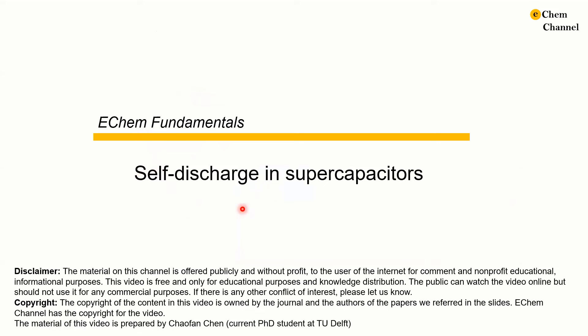Self-discharge is the voltage drop experienced by electrochemical energy storage devices at the charged state. Self-discharge rates are often higher in supercapacitors than in batteries, making self-discharge an important consideration for supercapacitors. A high self-discharge rate results in a significant and rapid voltage drop after charging, leading to lower available energy and power. In this video, I will talk about the causes of self-discharge in supercapacitors.